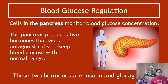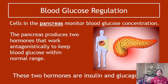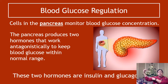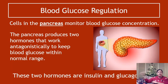The pancreas produces two hormones that work antagonistically. Antagonism might be a new concept — things that work antagonistically work opposite from each other, one does one job and the second does the opposite. We often talk about muscle pairs working antagonistically: a bicep pulls the arm up, while the tricep works antagonistically and pulls the arm down.